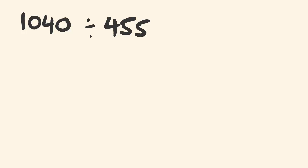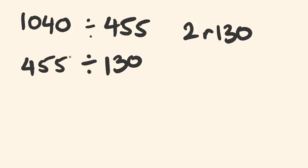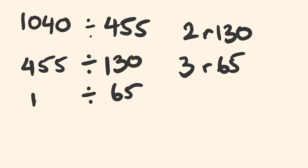1040 divided by 455 gives 2 with a remainder of 130. Move 130 down to the next stage, then 455 divided by 130 goes 3 times with a remainder of 65. Still haven't found the greatest common factor yet, so we go one more step: 65 moves down, and 130 divided by 65 is 2 with no remainder — so 65 is our greatest common factor.